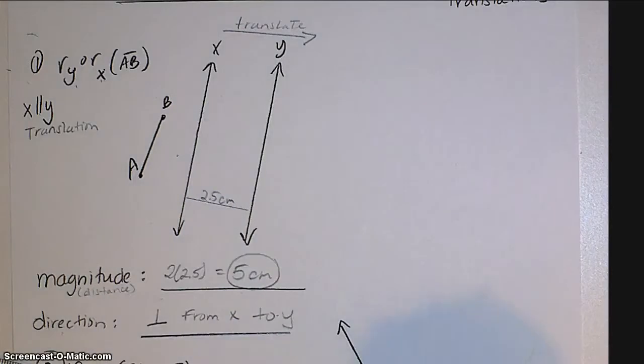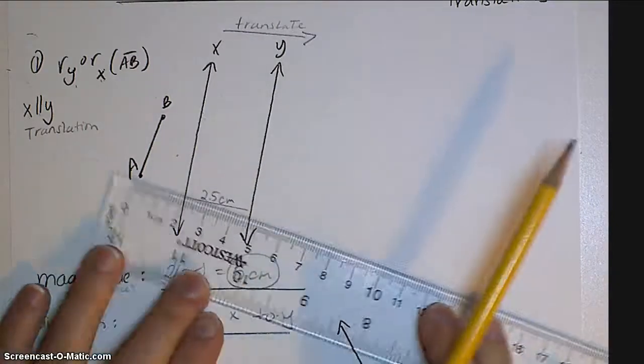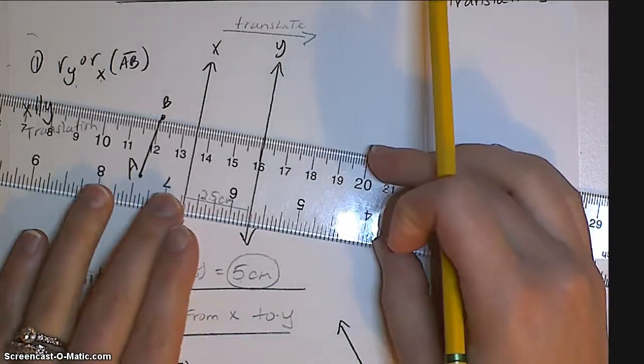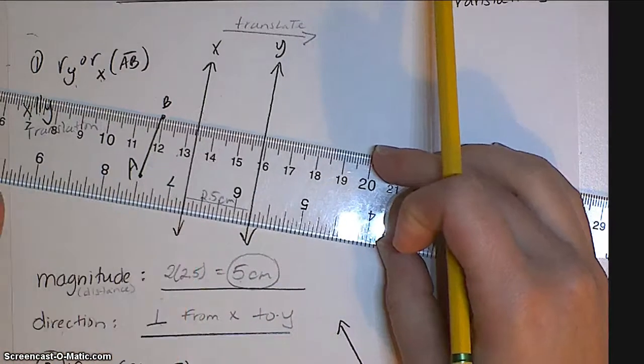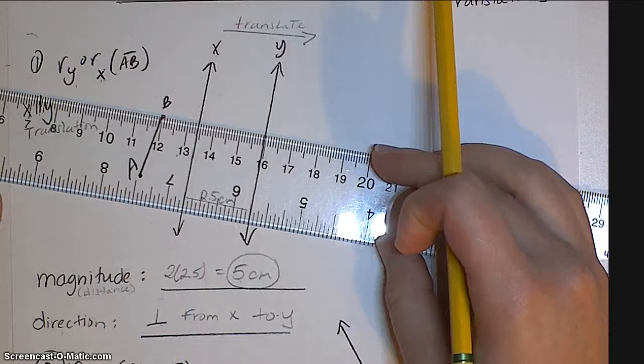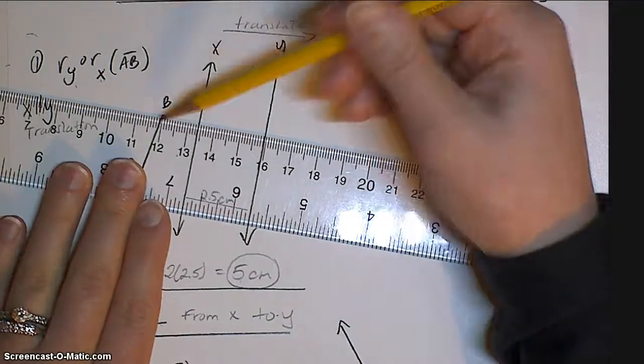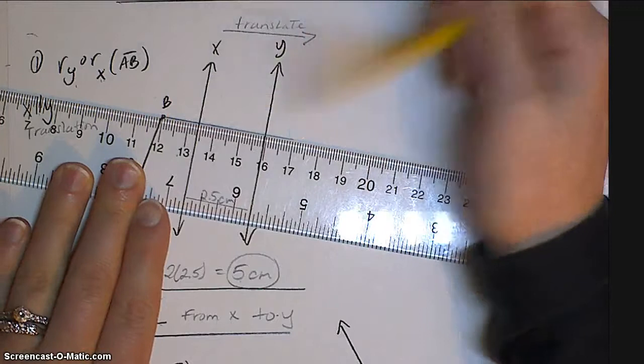Okay, so I'm going to now describe this translation using a magnitude of 5 centimeters perpendicular from x to y. I can then measure each one of these so that it is 5 centimeters perpendicular from x to y.